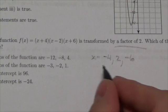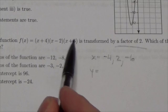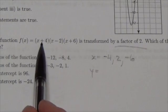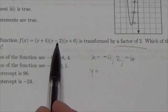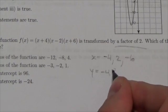And then if we want to find the y-intercept, we're just going to let x equal 0. This is going to be 0 plus 4, 0 minus 2, 0 plus 6. So 4 times negative 2 would be negative 8. Times 6 is going to be negative 48.